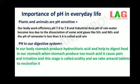Second, the pH in our digestive system. In our body, the stomach produces hydrochloric acid and helps to digest food. When the stomach produces too much acid, it causes pain and irritation, and this stage is called acidity. We take antacid tablets to neutralize it.